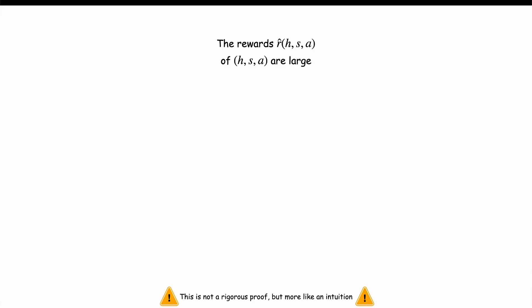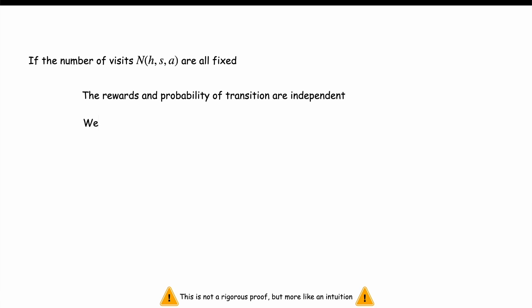Basically the reason why we do that is that in our story everything is correlated by the number of visits of each time state and action h s a. If the rewards of some h s a are large then your algorithm will try to visit it more so its number of visits will increase and therefore it is correlated to the rewards making the analysis a lot more complicated. However given a fixed number of visits of h s a then the rewards and probability of visits are independent. Therefore we can bound the regret term for each value of n of h s a and then sum all the bounds.